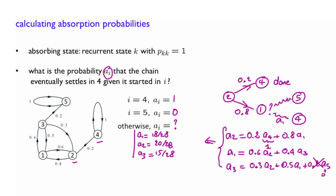Now, what if you had been interested instead in finding the probability b of i that the chain eventually settles in 5 given you started in i? How to do that? Well, you can repeat exactly all these calculations that we have done, but looking at 5 as the state of interest. But of course, you don't have to do this.